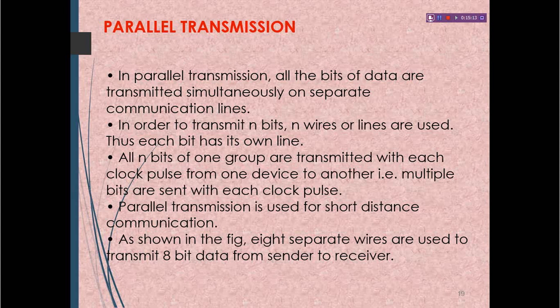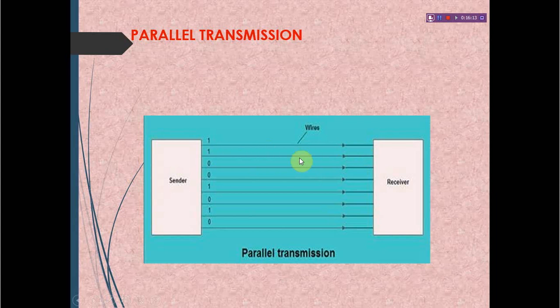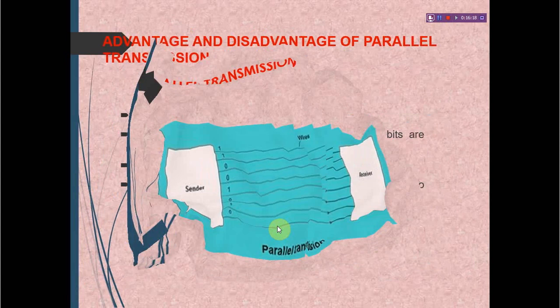Next is parallel transmission. In parallel transmission, all the bits of data are transmitted simultaneously on separate communication lines. In order to transmit N bits, N wires or lines are used, so each bit has its own line. All N bits of one group are transmitted with each clock pulse from one device to another — multiple bits are sent with each clock pulse. Parallel transmission is used for short distance communication. As shown in the figure, eight separate wires are used to transmit eight-bit data from sender to receiver simultaneously.